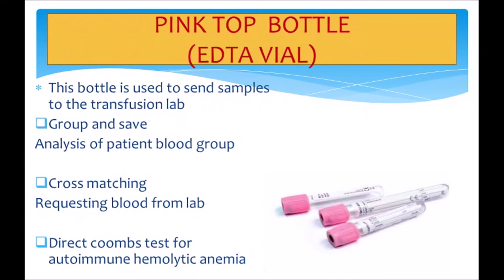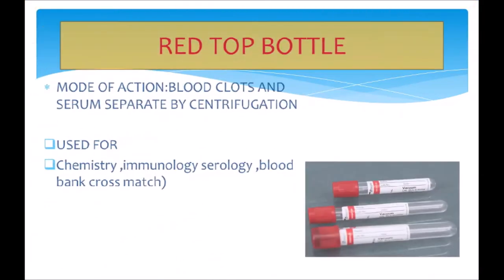Next is the pink top bottle. The pink top bottle is used when we need to send blood samples to the transfusion lab. We use it to analyze the patient's blood group and for the direct Coombs test, collecting the patient's blood sample in the pink top bottle.